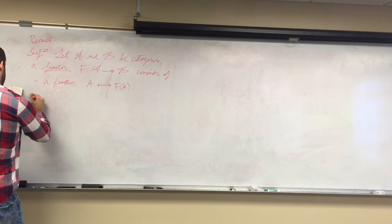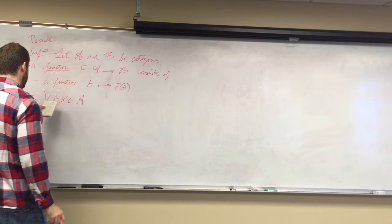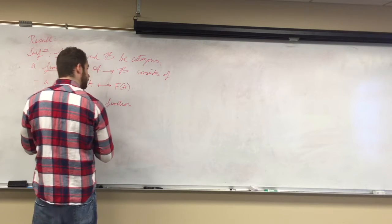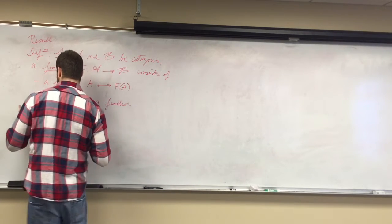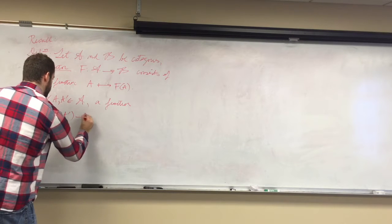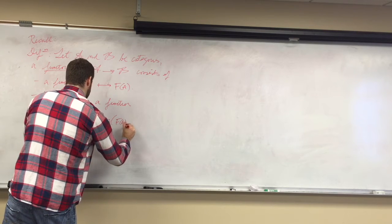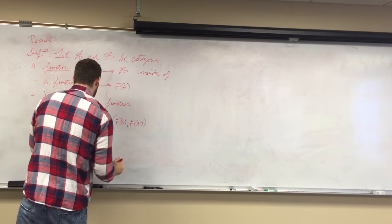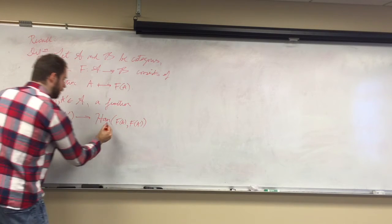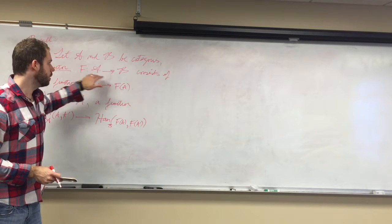We're also going to have another function. For all objects, it's going to go from the hom-set of A, A-prime to the hom-set of F of A, F of A-prime. These are morphisms in A, and these are morphisms in B. So a functor is going to map objects to objects, and maps to maps.